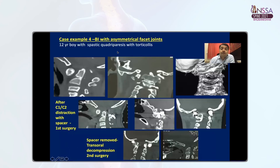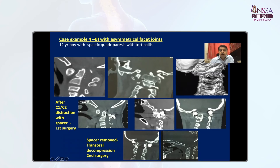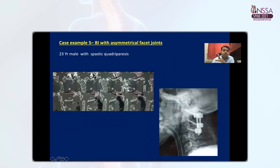One interesting case: a 12-year-old boy with spastic quadriparesis and torticollis. The joints showed one grossly vertical side and one horizontal, with tilt, torticollis, and rotation. We did C1-C2 distraction and spacer in the first surgery; BI was significantly reduced. But AAD worsened, causing canal compromise and the patient developed neurological deficit. The next day we removed the spacer and performed transoral decompression to improve the patient, but he discharged with persistent neurological deficit. What we learned: with gross BI and gross facet asymmetry, we never apply a spacer — just bone chips, a little compression, and attempt in-situ reduction.